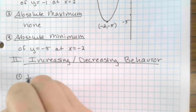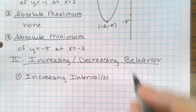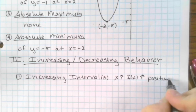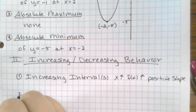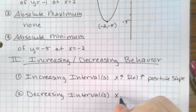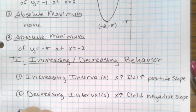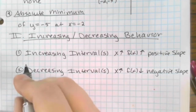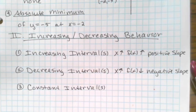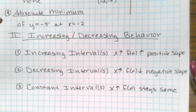Number one, you can have increasing intervals, and there can be more than one. That's where, as your x gets larger, your f of x or your y gets larger — in other words, it has a positive slope. The second one is decreasing intervals — as x gets larger, f of x is getting smaller; that has a negative slope. And the third type, which you don't see very often, is a constant interval, where as x gets larger, f of x stays the same.